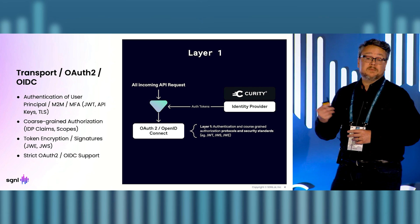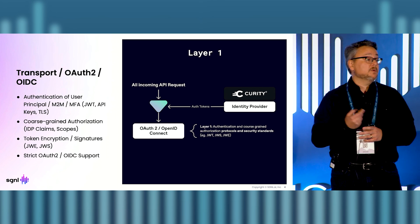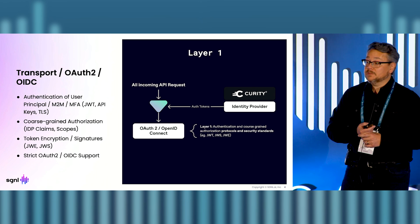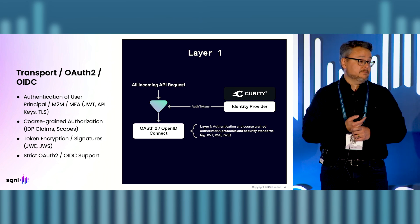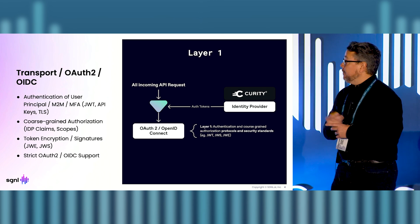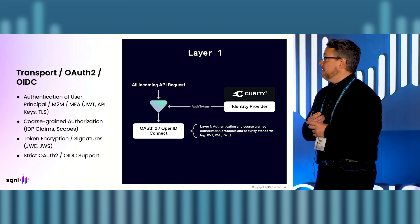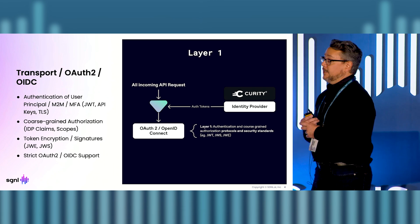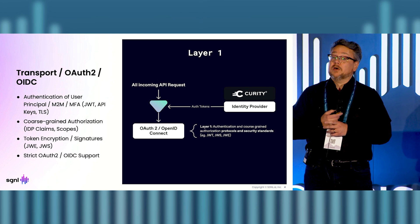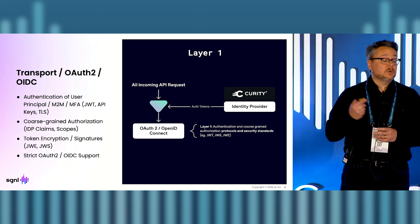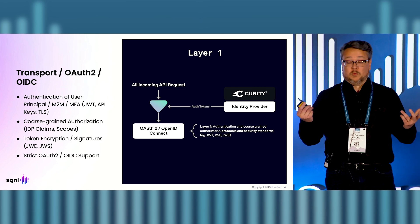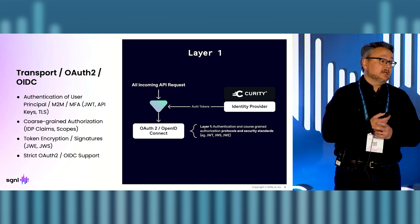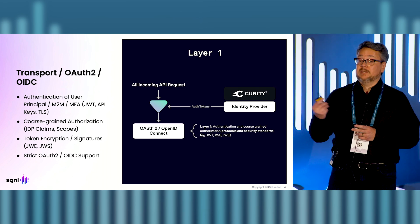That's layer one for the demonstration — the Curity Identity Server. It's actually my favorite identity provider; I've worked with most of them in the market in my 20-22 years of experience. What I've done in the demo is authenticate a user principal, and the Curity server makes it easy to create authorization codes and access tokens that protect the API.